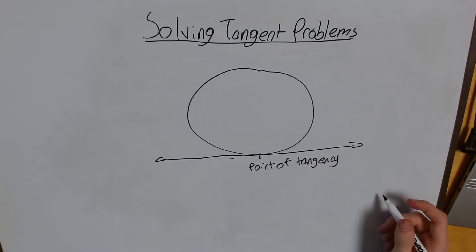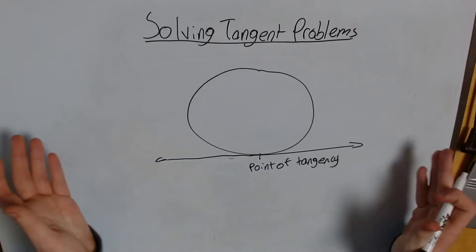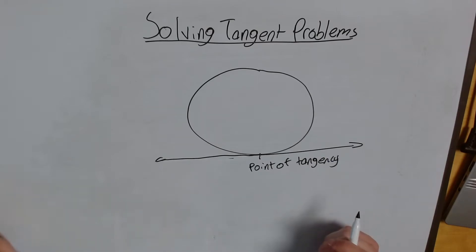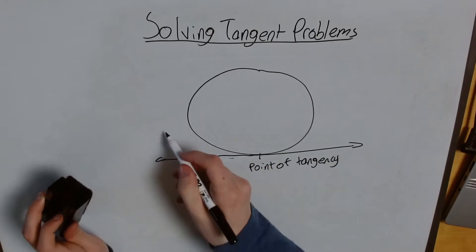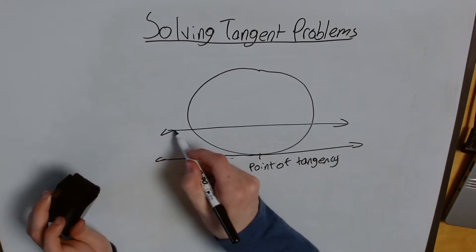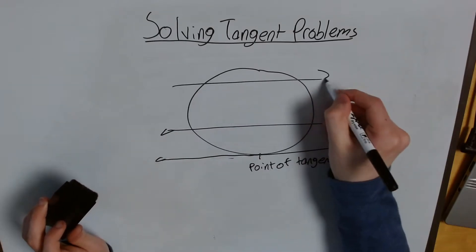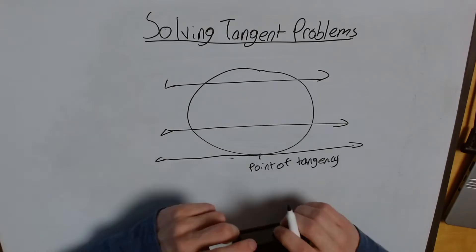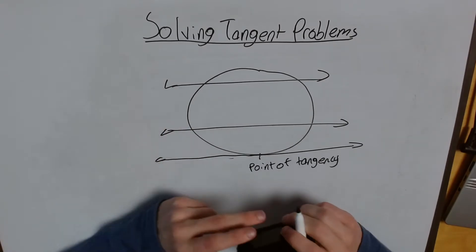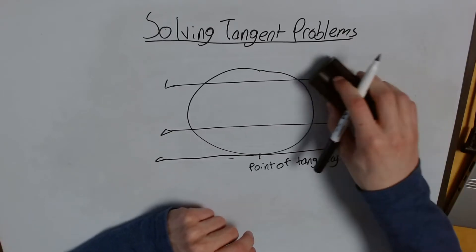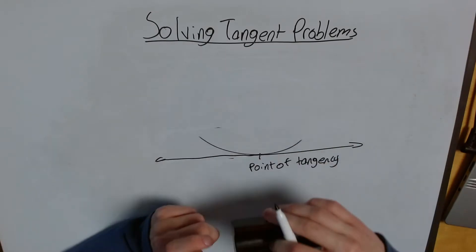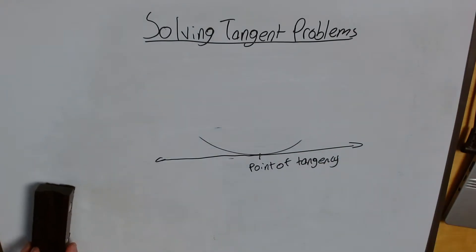Now, essentially, what a tangent is is a straight line that intersects a circle at one point. It doesn't cross it. It's not like this or this. These are what we would call secants. They're an extended chord or straight line that crosses a circle at two distinct points. A tangent only crosses a circle at one of them. Now, you might ask, well, okay, why is that useful for me?